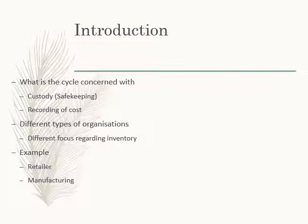The production and inventory cycle is mainly concerned with achieving two objectives: taking custody of inventory and ensuring the safekeeping thereof, and recording the cost of inventory when it goes through a manufacturing or production process. There are different types of organizations with different focuses on how they treat inventory. For example, a retailer would be concerned with purchasing inventory from a supplier, having sufficient warehouse space, and then selling it to a customer at cost plus a profit margin.